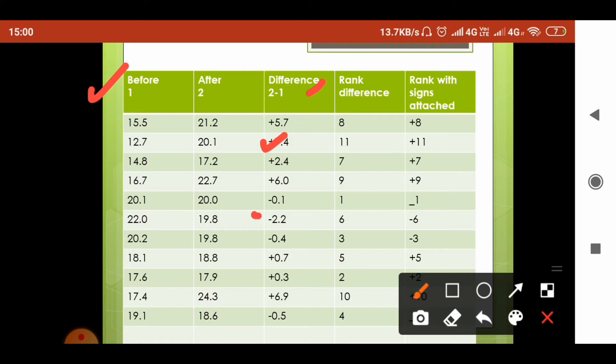You will get positive values as well as negative values. See, here you get minus 0.1 because the after score was 20 and the before score was 20.1, so the difference is minus 0.1.